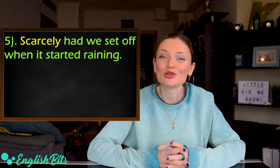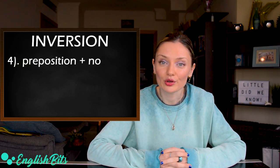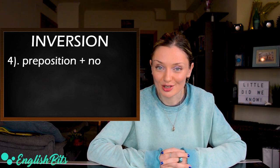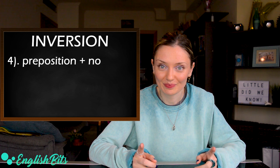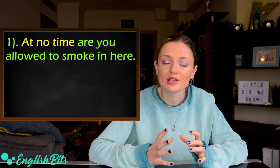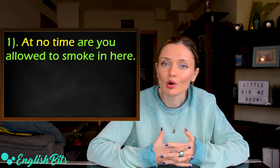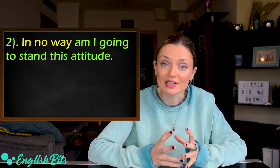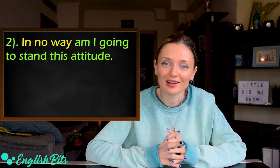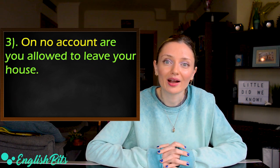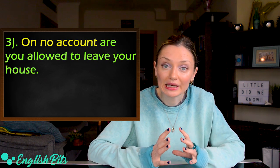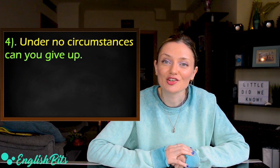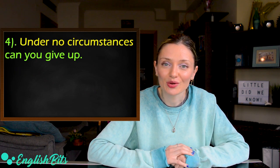Let's move on to our case number four. We use inversion after a preposition plus no. And now let's look at some examples. The first one, at no time are you allowed to smoke in here. The second example, in no way am I going to stand this attitude. Another example, on no account are you allowed to leave your house. And one more example, under no circumstance can you give up.